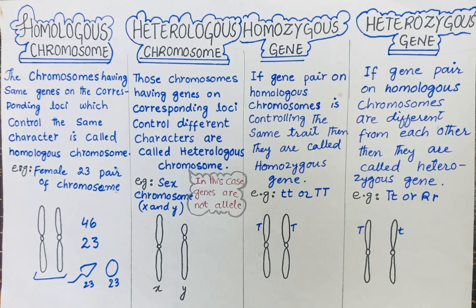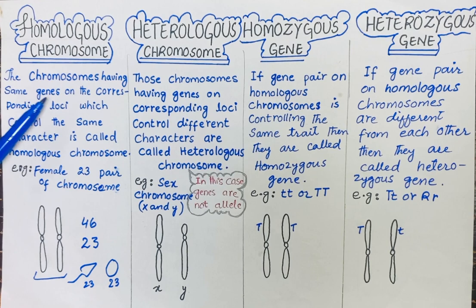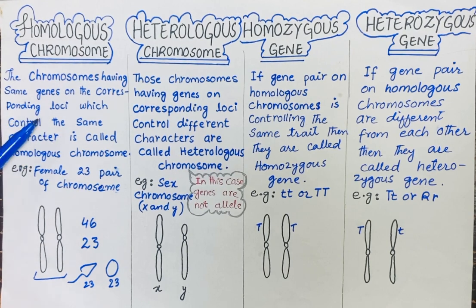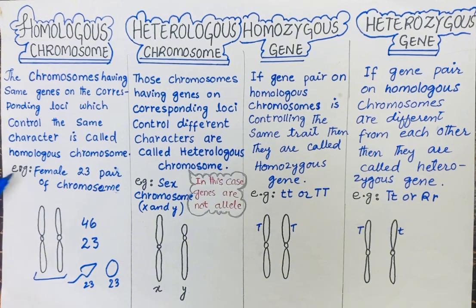The definition of a homologous chromosome is: chromosomes having the same genes on the corresponding loci which control the same character are called homologous chromosomes.